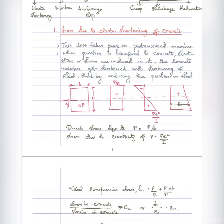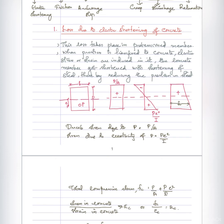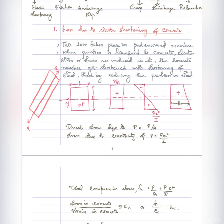The first one is loss due to elastic shortening. When prestress is applied, the concrete will shorten — it will undergo axial compressive shortening. At the same time, the elastic shortening of concrete will induce a loss in the prestress in the steel. That criteria is elastic shortening.